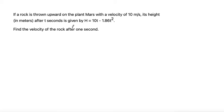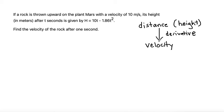We want to find the velocity of the rock after one second. Keep in mind that this function is a height function, which is a type of distance function. If you have a distance function, which could be represented as a height function, if you take the derivative of that function, you get the velocity function.